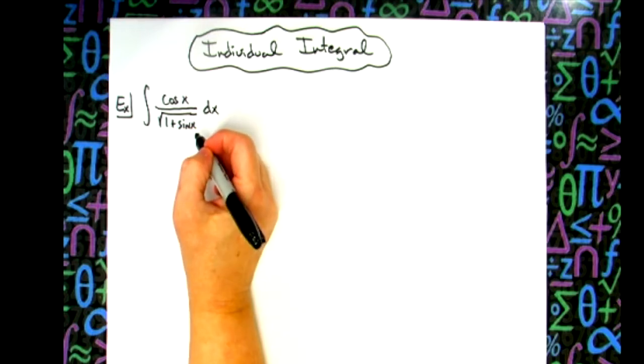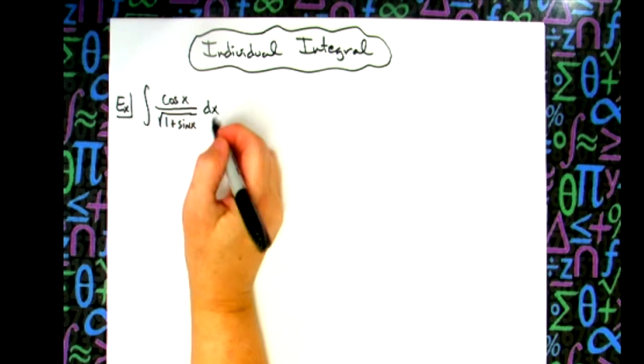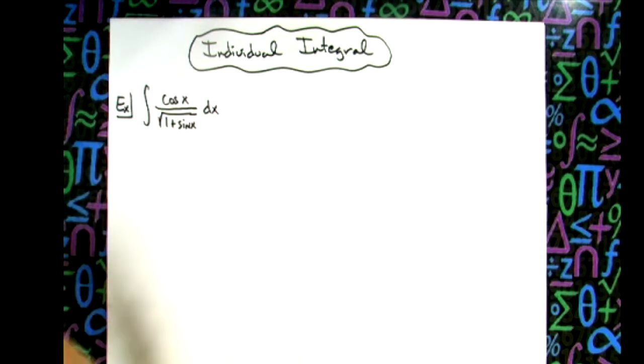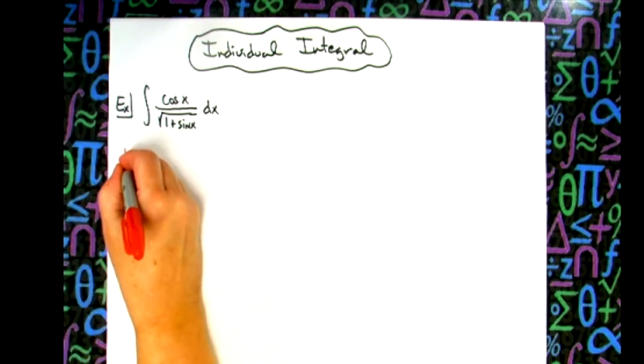1 plus sine x is definitely an inside part. If I take the derivative of that sine, I'm going to have cosine, and then those cosines are going to cross out. So if you can think ahead a little bit and see that, then that's really good, and it's going to help you pick that U.